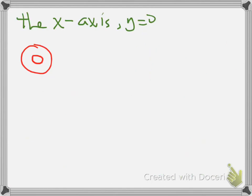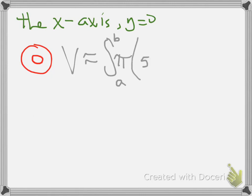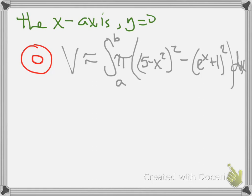Now that I know my outer and inner radii, I can set up the volume integral. The volume is approximately the integral from A to B of pi times the outer radius squared — (5 minus x squared) squared — minus the inner radius squared — (e to the x plus 1) squared — dx. That gives us the volume for this particular scenario.